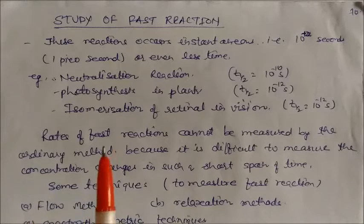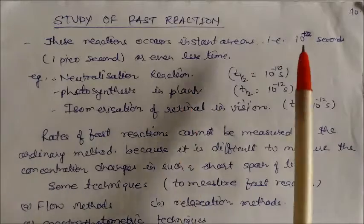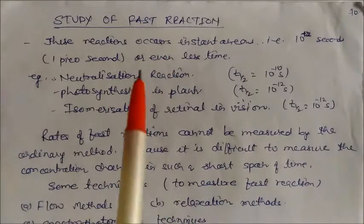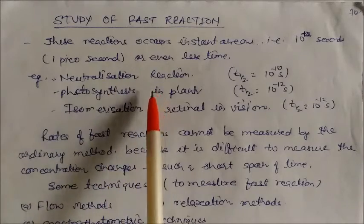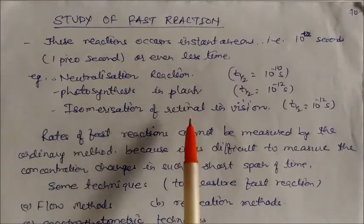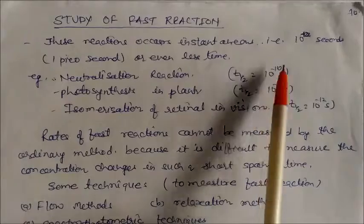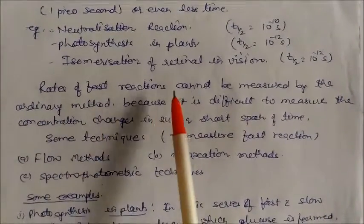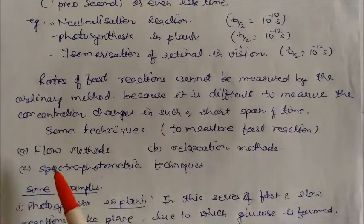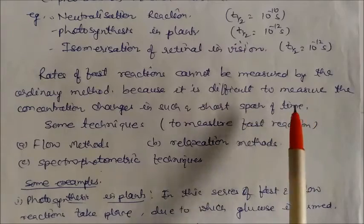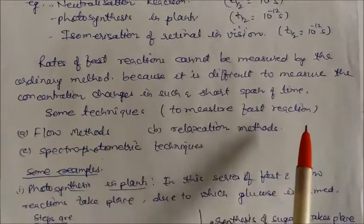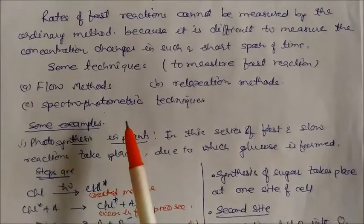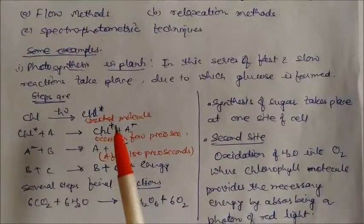Now we will study fast reactions. These reactions occur instantaneously — in about 10^-12 seconds (one picosecond) or even less. Examples: neutralization reaction (half-life ~10^-10 seconds), photosynthesis in plants (~10^-12 seconds), and isomerization of retinal in vision (~10^-12 seconds). Rates of fast reactions cannot be measured by ordinary methods because it is difficult to measure concentration changes in such a short time. Techniques to measure fast reactions include flow methods, relaxation methods, and photometric methods.